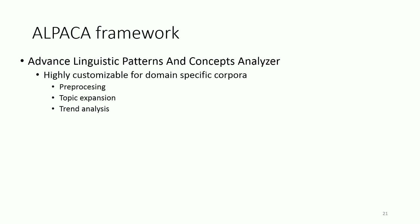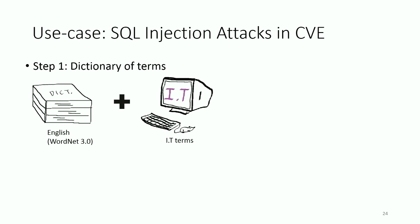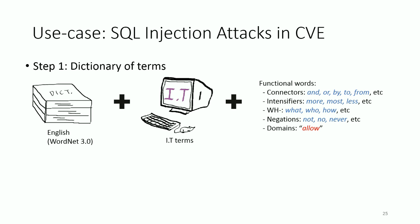In the following example, we demonstrate one use case of Alpaca to find the chance of SQL injection attacks on a CVE dataset. Step 1: we choose the dictionary used for this dataset. The early version of Alpaca came with a dictionary for English and IT-related words. It also defines a list of functional words such as connectors, intensifiers, wh-words, and negations. We can also define new domain-specific functional words.